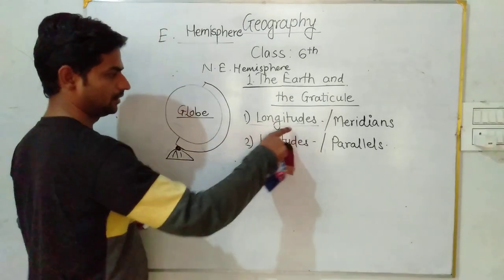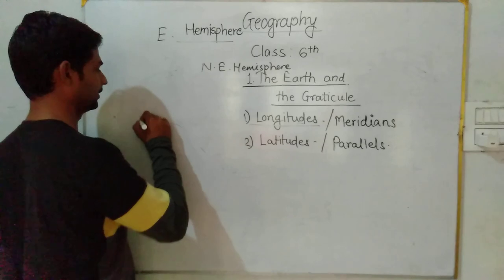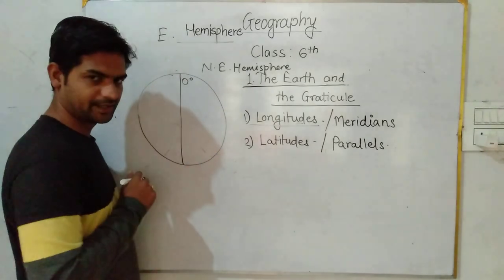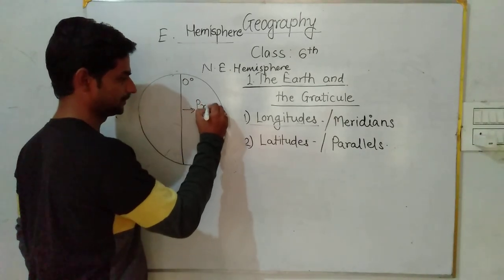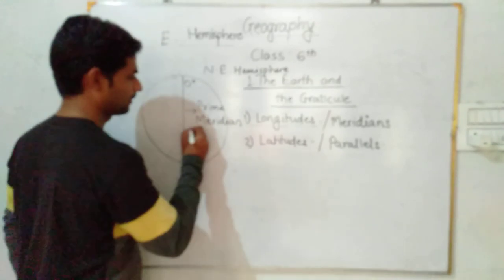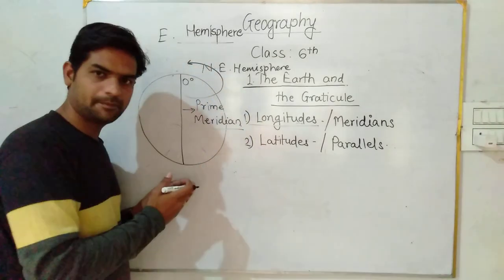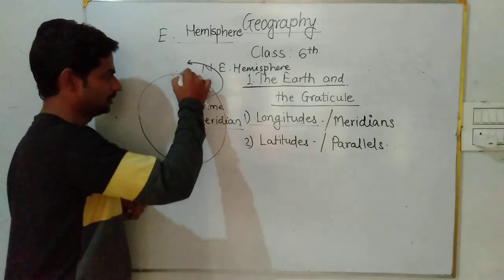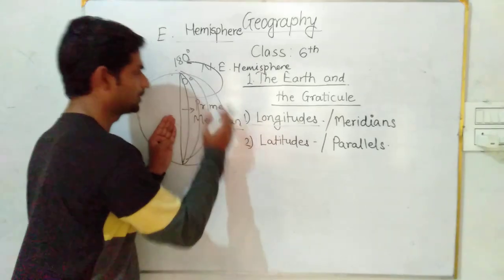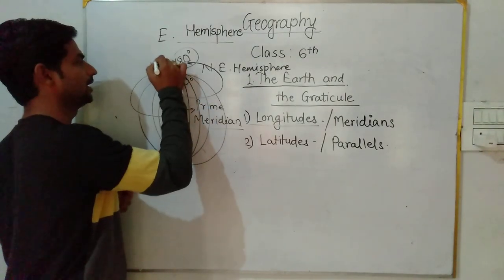We will discuss about the longitudes. There is one major longitude and that longitude is also called the prime meridian. This is marked as zero degree and this is called the prime meridian. From the prime meridian toward the east, on this half portion of the earth, there are total 180 meridians — meaning in the Eastern Hemisphere there are 180 meridians. And from the west, same thing — there are total 180 meridians.